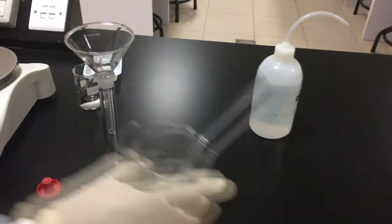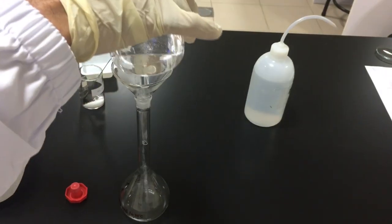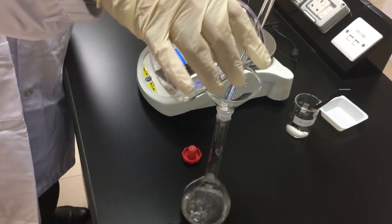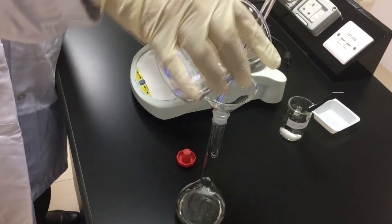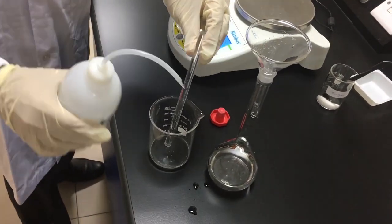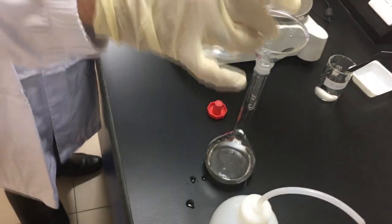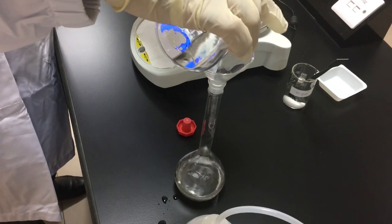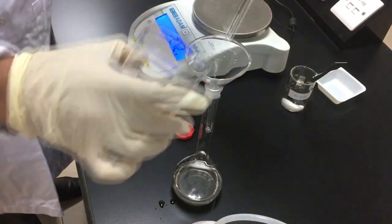Use a funnel to transfer the mixture to a volumetric flask. Rinse the stirring rod and the beaker for many times to recuperate the whole amount of sugar. Then transfer water to the volumetric flask and rinse the funnel.